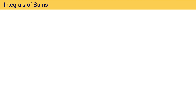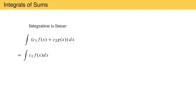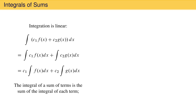The integrals easiest to reduce to simpler forms are integrals of a sum of functions. To do this, we use the fact that integration is linear, which means the following: when integrating a sum of two functions such as a constant c1 times f plus a constant c2 times g, the integral can be distributed to each term. Any constant can also be factored out in front of the integral. The integral of a sum of functions is the sum of the integrals of each function, and constants can be factored out.